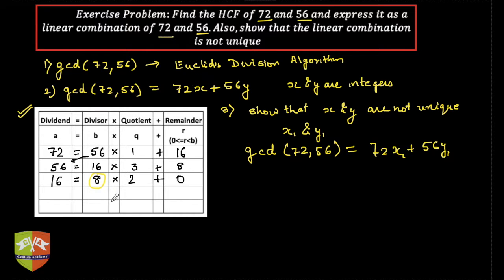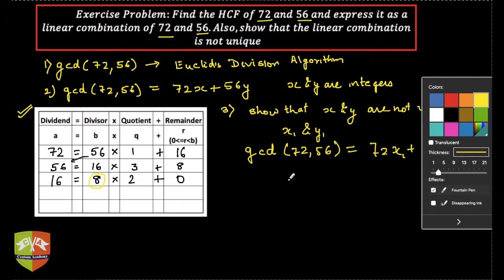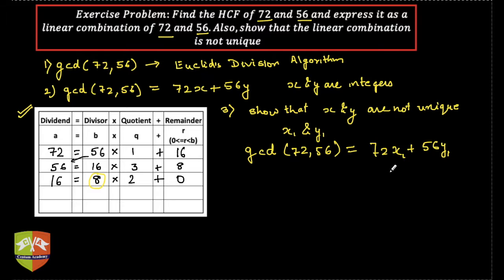According to Euclid's division algorithm, the GCD is the last step's divisor, which is 8. So GCD of 72 and 56 is equal to 8.